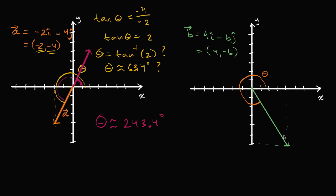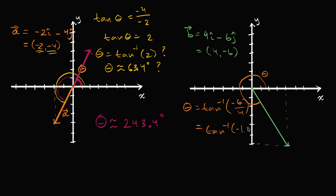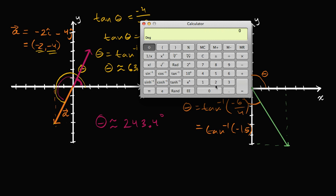Let's do one more. Here I have a vector sitting in the fourth quadrant. Pause the video and see if you can figure out the positive angle it forms with the positive x-axis. We could do the same drill and skip a few steps now that we've done it many times. We might want to say theta is equal to the inverse tangent of the y component over the x component — that's negative six over four, which is the inverse tangent of negative 1.5.